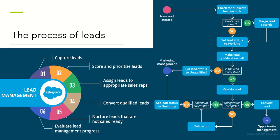Processing your leads involves basically six stages: capturing, scoring and prioritizing, and assigning leads to appropriate sales reps — because sometimes criteria like industry experience or geographic region mean one rep is better suited than another for a particular lead. Then converting your leads, nurturing them so that if they're not ready to buy right now, they hopefully will be in a couple of weeks or months — usually the case with large expensive items. And lastly, evaluating your lead management process, constantly going back and providing feedback to the marketing team to determine whether you're on the right track.